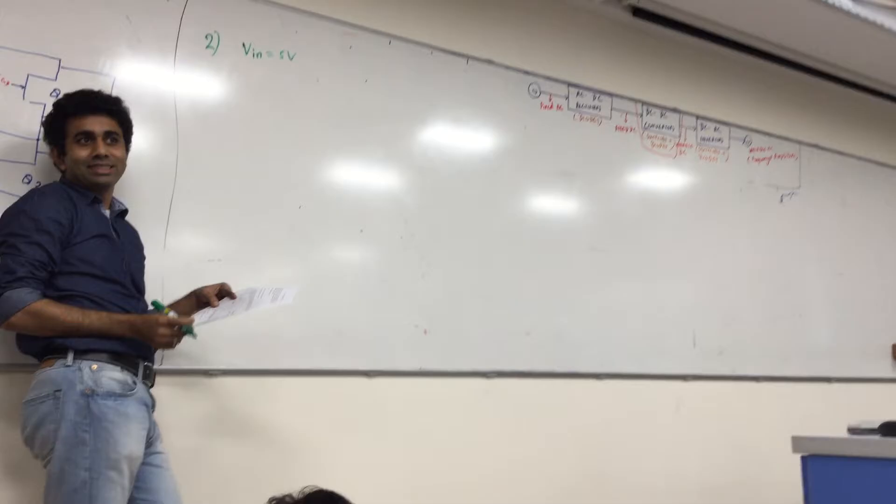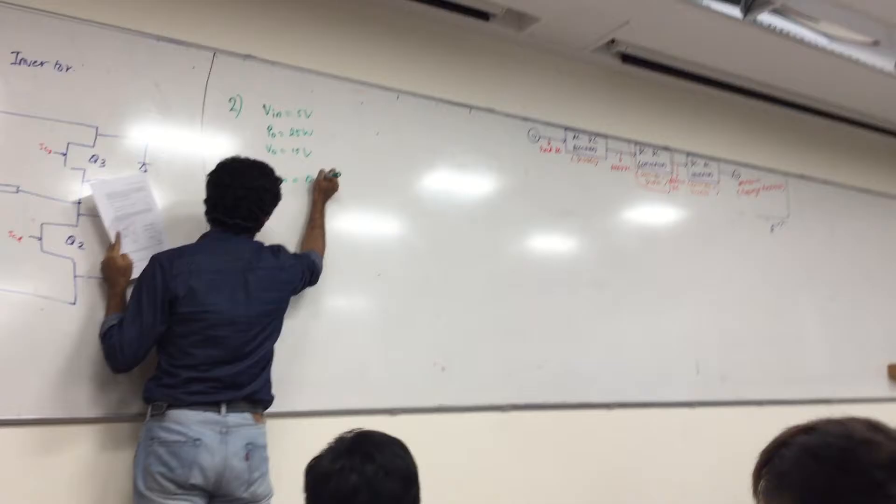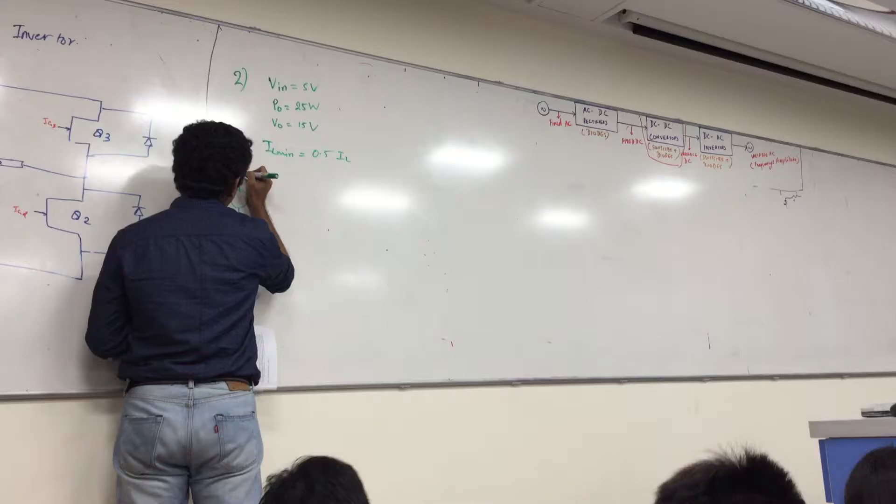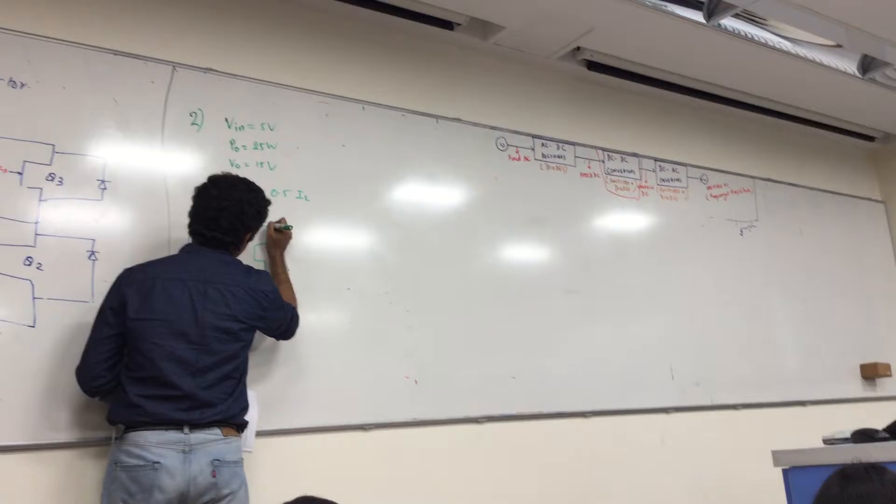This looks notoriously like a tutorial question, right? Just some values are different. Output power of 25 watts, VO is 15 volts, and I am given IL-min is 0.5 of IL. Ok, just this much is given to me.